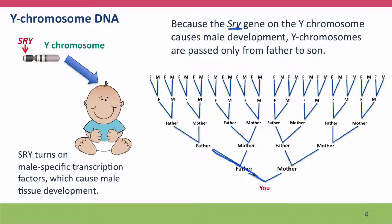The Y-chromosome that you got from your father, he got from his father, and your paternal grandfather got it from his father, and so on all the way back. Looking at DNA sequences on the Y-chromosome — and this uses the same kinds of DNA sequences used for DNA fingerprinting — gives you a trace of your ancestry in the male line.